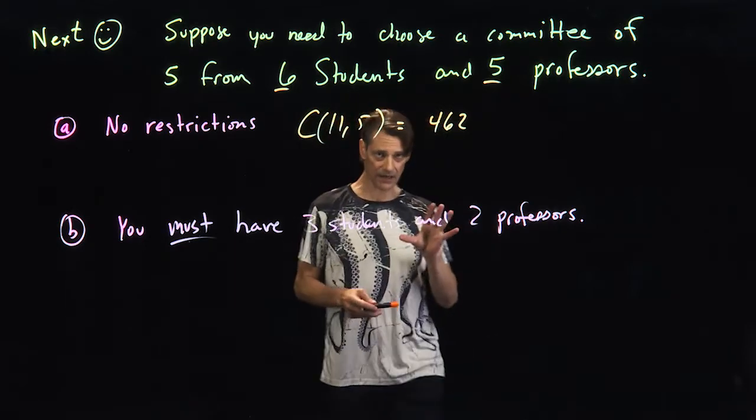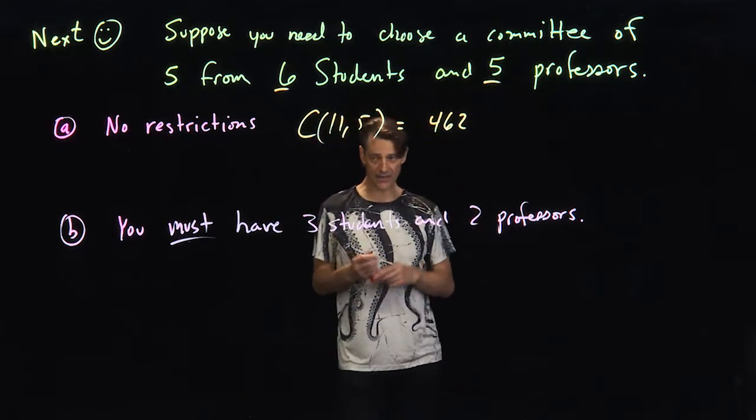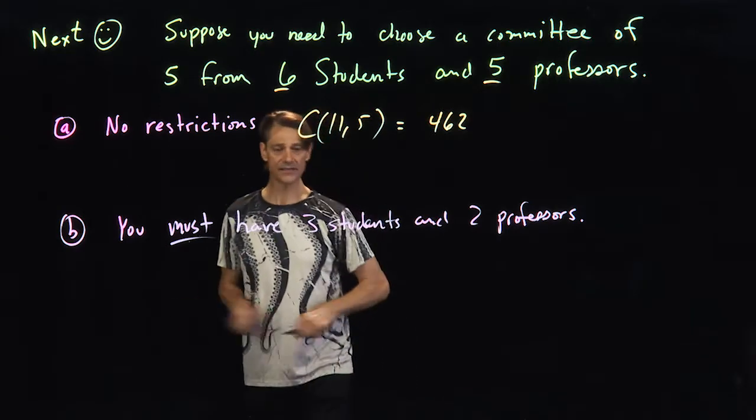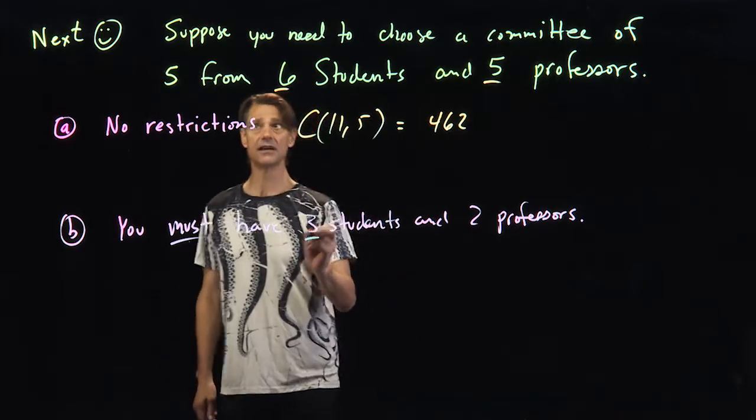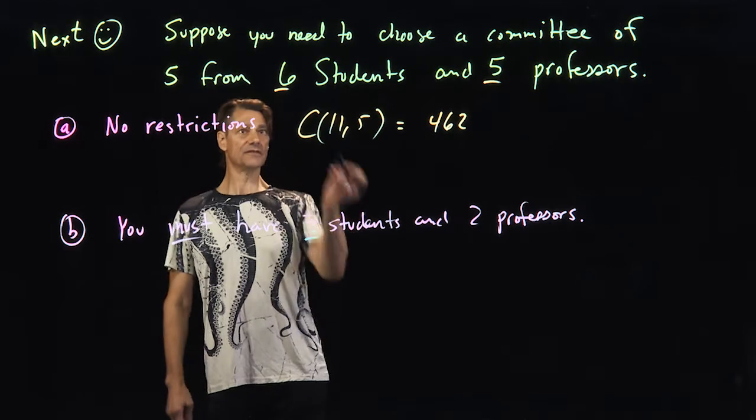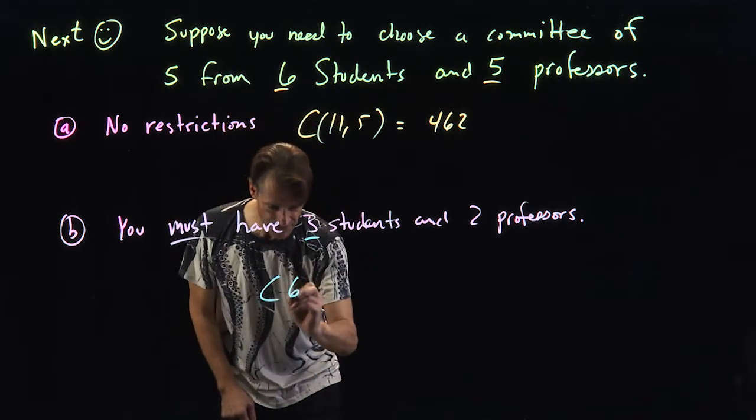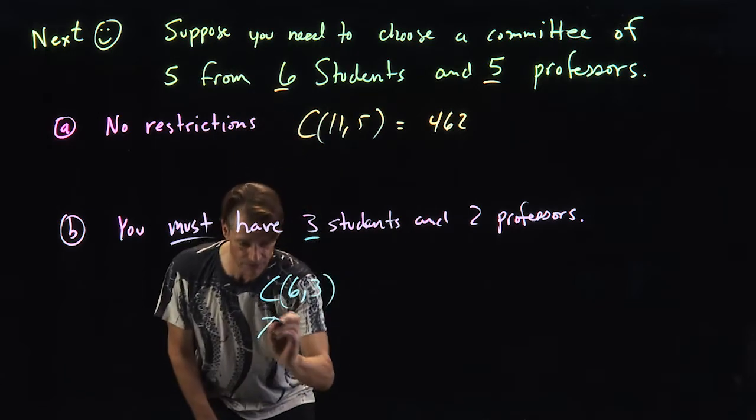So here we got to be careful because we're mixing and matching ideas. So the first thing to think about is how many ways can we pick these three students from the six students that there are? Well, this is a simple choice. This is six choose three. Here's the number of ways to pick the students.